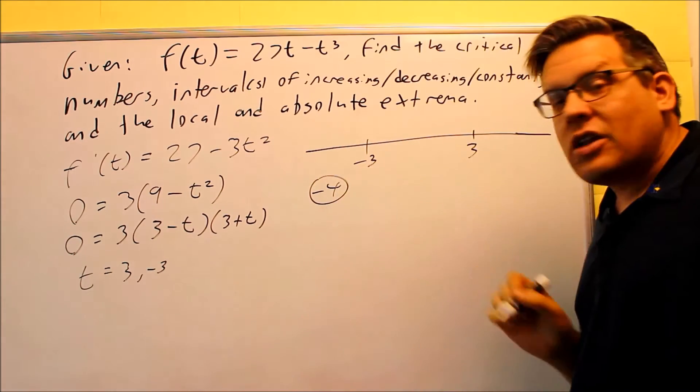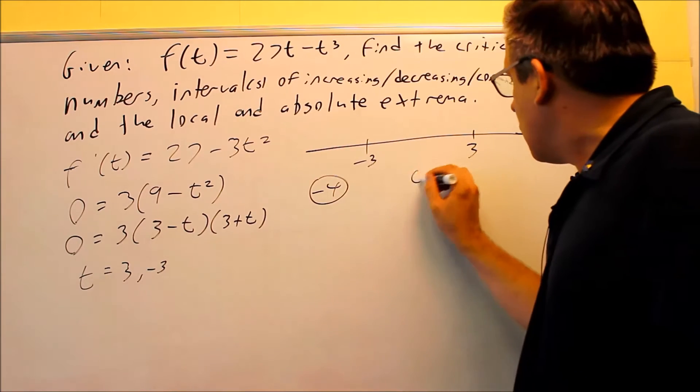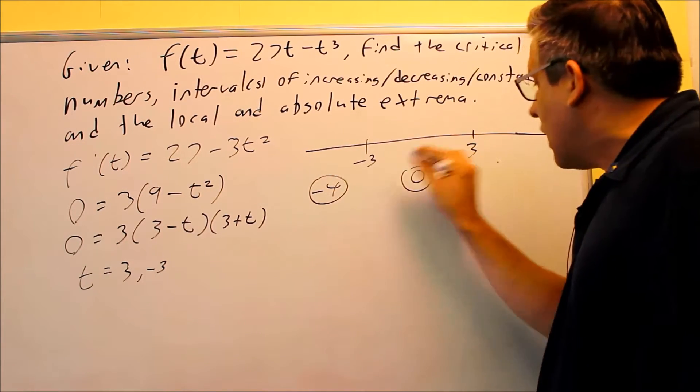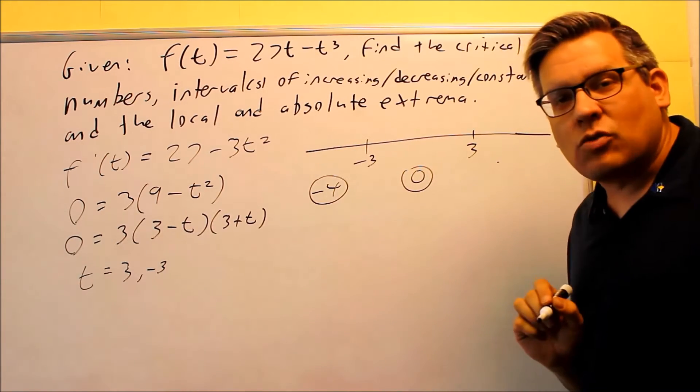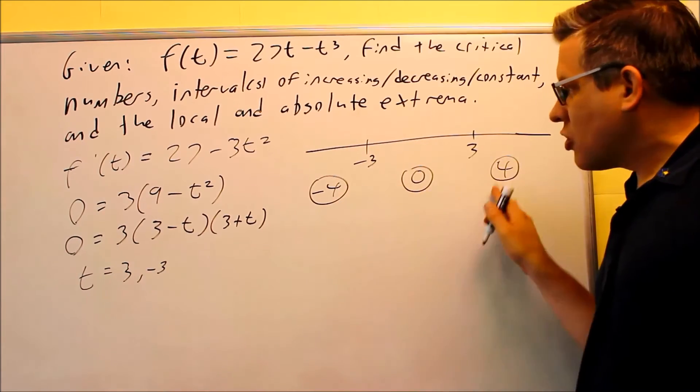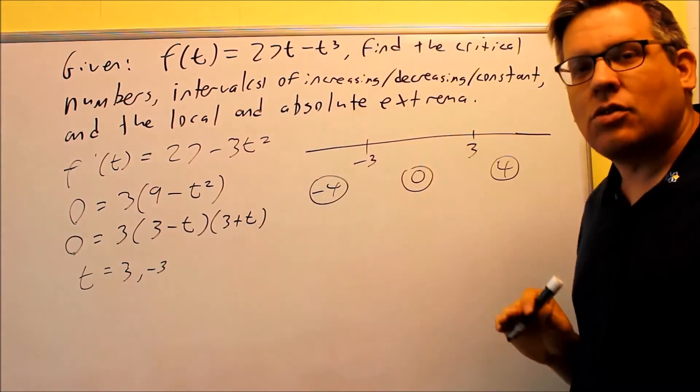So again, I'm putting that underneath down below here so we don't get it confused when we write our answer. This is going to have a 0. And then any number between negative 3 and 3 is fine. 0 is always an easy one to use. And then I have a 4. These numbers will go into your first derivative function, not the original one.